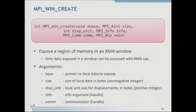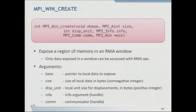Not everyone may have memory they want to expose — it could be that only rank zero wants to expose its memory. But they still have to call the function; they can all pass null with size zero, meaning they don't have anything to expose. They'll still be part of the collective and get one window object. If they have not exposed anything, nobody can access that data — only the one that has passed a valid buffer can be a target of one-sided operations.